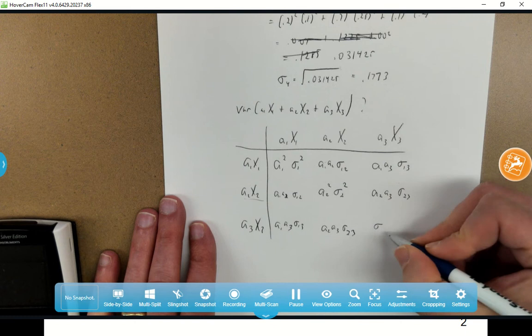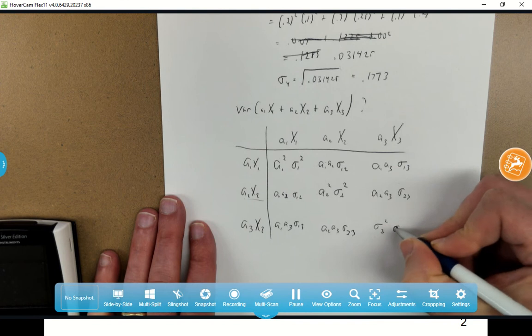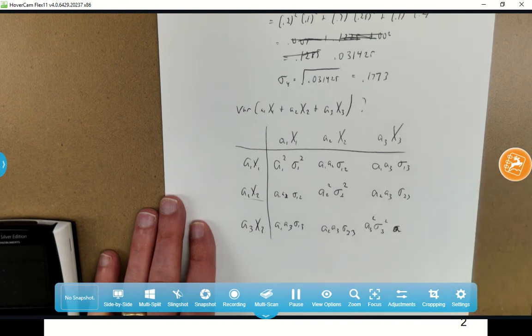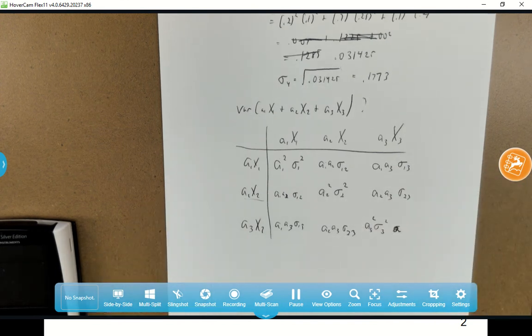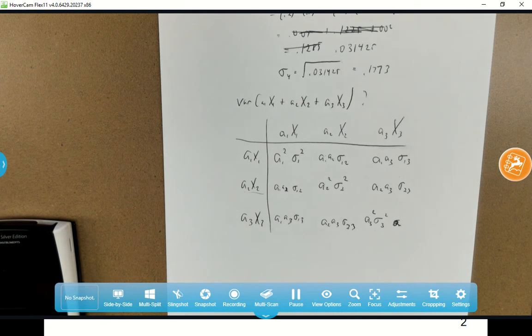And finally, A3 squared sigma 3 squared. That's kind of the way that I want to write that. That's just a nice matrix way that you could write this. Now let's try it towards the social choice fund.